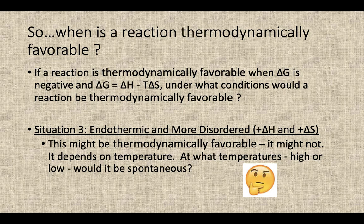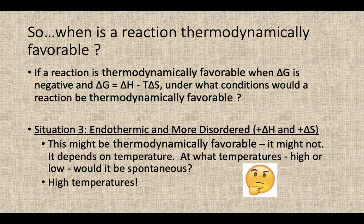We have to think about high versus low temperatures. Which type of temperature — cold or hot — would result in thermodynamically favorable conditions, a negative delta G value? High temperatures. Because if T is very big, you're taking a positive delta H minus a big number, so your answer is going to be negative. Hot temperature conditions are the right conditions to make an endothermic reaction proceed in the forward direction, as long as it's also becoming more disordered.